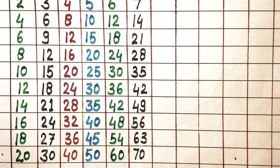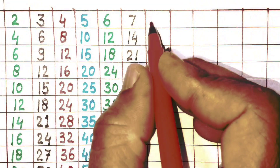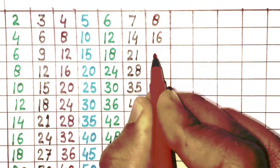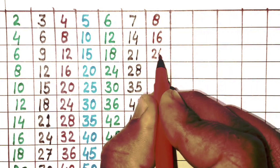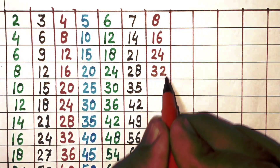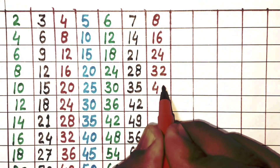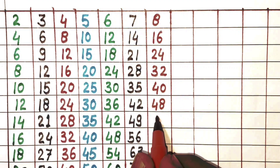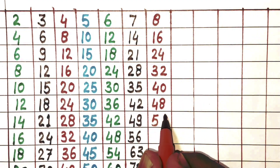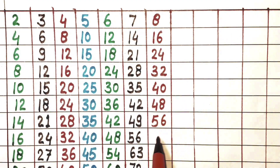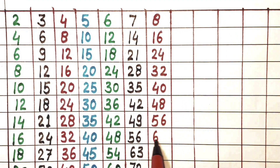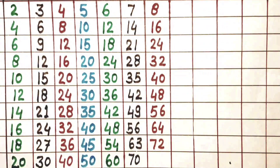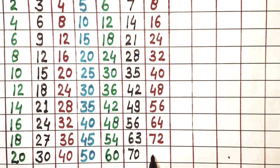Next 8. 8×1 is 8, 8×2 is 16, 8×3 is 24, 8×4 is 32, 8×5 is 40, 8×6 is 48, 8×7 is 56, 8×8 is 64, 8×9 is 72, 8×10 is 80.